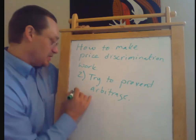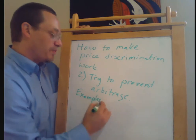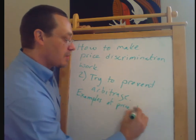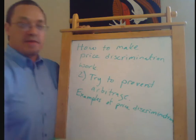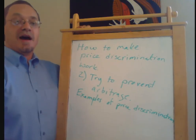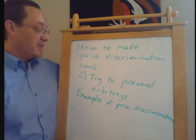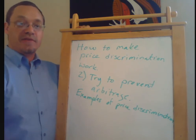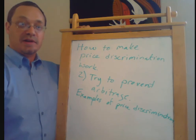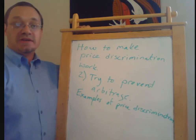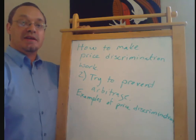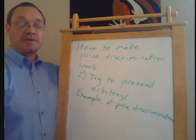What are examples of price discrimination? The examples are basically limitless. Economists love the example of airline tickets and prescription medicines — those are great examples. Senior discounts and student discounts are also obvious examples. A movie seat isn't any more expensive to sell on a Friday night than on a Friday afternoon, so matinees versus primetime are examples of price discrimination.